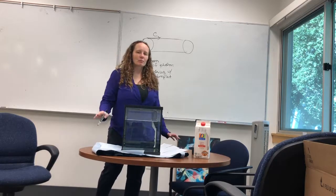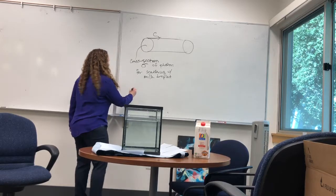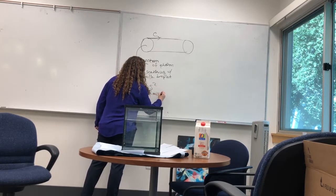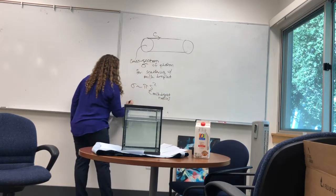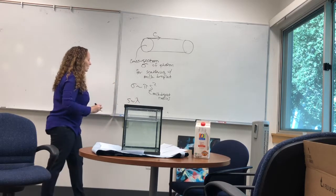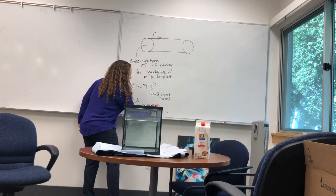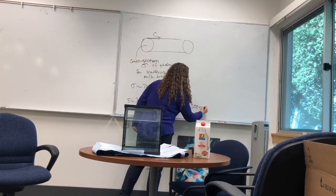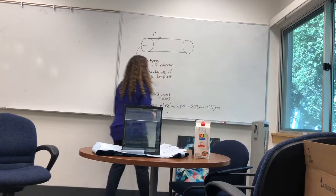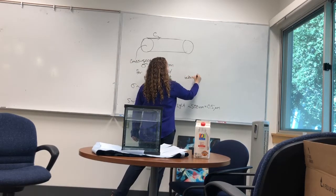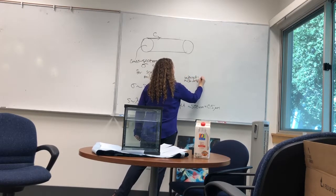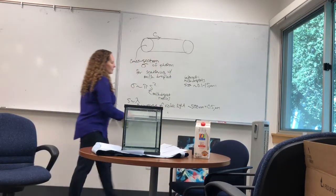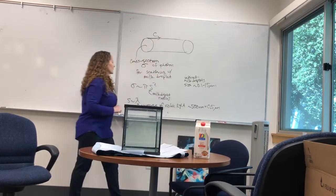These droplets are about the size of the wavelength of the light, which means they can scatter pretty well, and we can have a cross-section that is about pi times the size of the milk droplet squared. We're just going to say that the size is about equal to the wavelength of visible light, which I'll just pick as about 500 nanometers — that's equal to 0.5 microns. The internet tells me milk droplets are sized from something like 0.1 to 15 microns, so this is pretty okay. We're just going to take it as being similar in size to the wavelength of visible light.